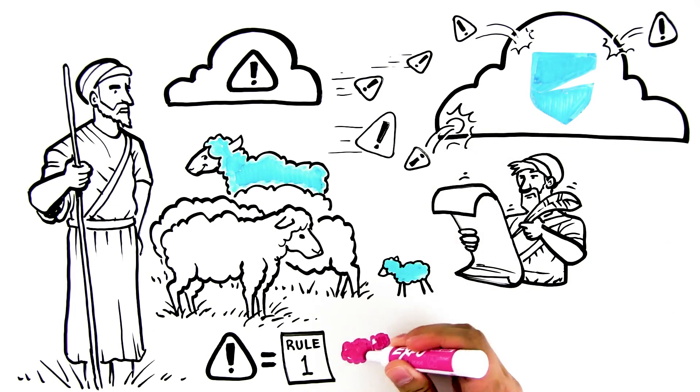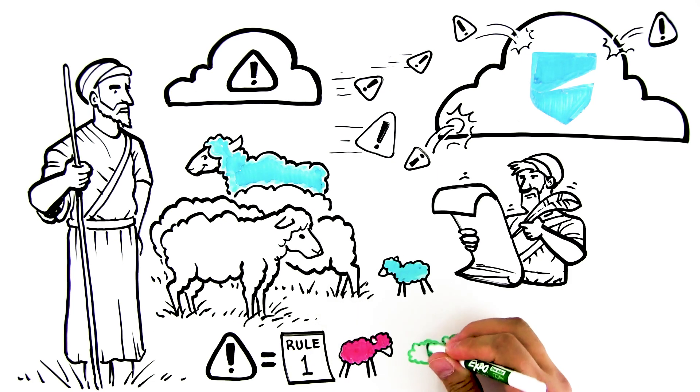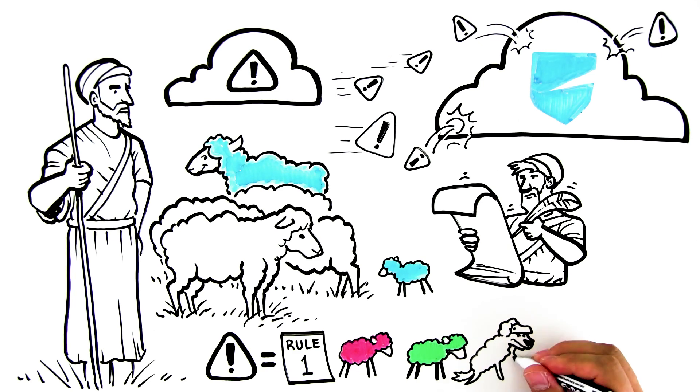But with each anomaly, the shepherd has to write a new rule. Pink sheep? New rule. Green sheep? New rule. Wolf in sheep's clothing? New rule.